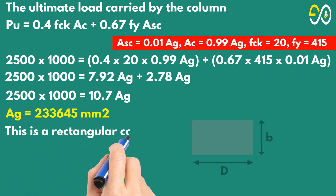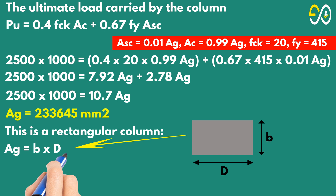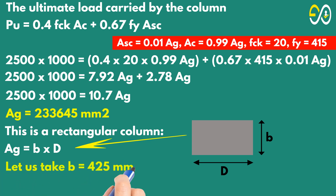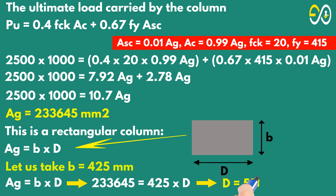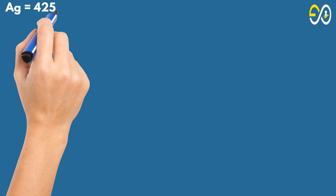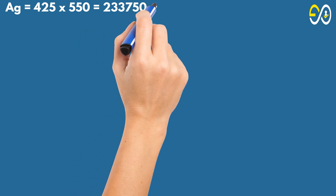This is a rectangular column, so Ag equals B times D. Let us take B equals 425 millimeters. Then 233,645 equals 425 times D, giving D equals 550 millimeters. Therefore Ag equals 425 times 550 equals 233,750 square millimeters.